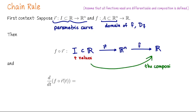Overall, the composition is a map from R to R. In other words, F of R of T is a function like Y equals F of X — it's a scalar-valued function of one input. The composition is just a function of one variable, T. So when we differentiate it, it's not a partial derivative; it's just regular differentiation with respect to T.